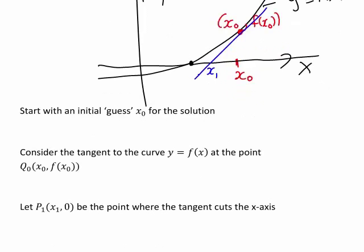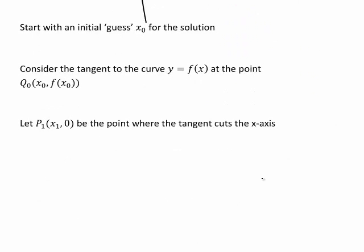How can we find the value of x1, this new approximation? To see how to work this out, let's have a think about the points on the tangent to the curve.